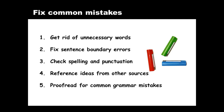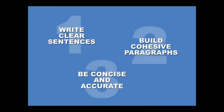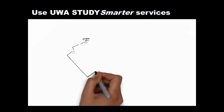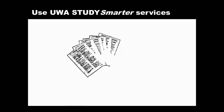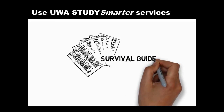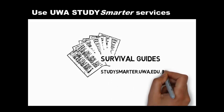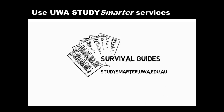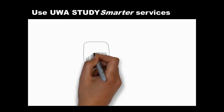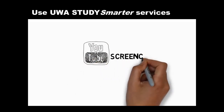In summary, you can make the writing you do for crime and society concise and accurate if you do these things. We hope you've enjoyed this video and that it helps you write clear sentences, build cohesive paragraphs, and be concise and accurate, so that your papers are easy to read and have impact. There's lots of help available from StudySmarter at UWA — you can download survival guides from our website, and get other StudySmarter YouTube screencasts to help with your writing. Good luck with your writing, and see you soon.